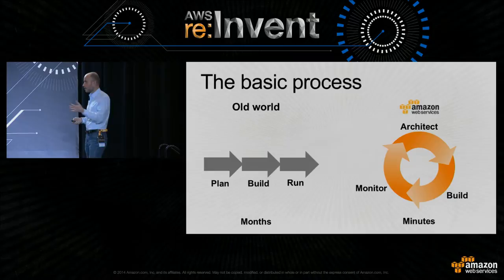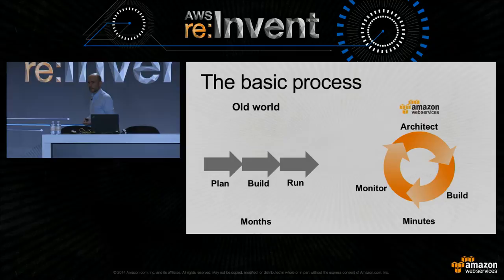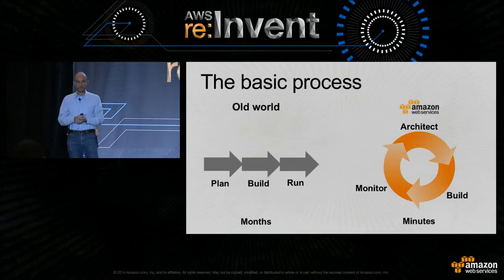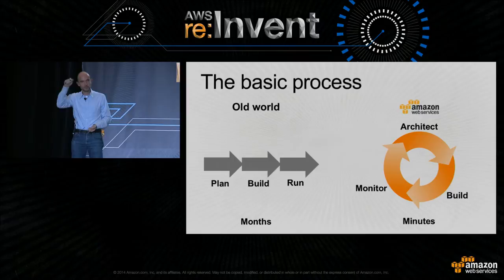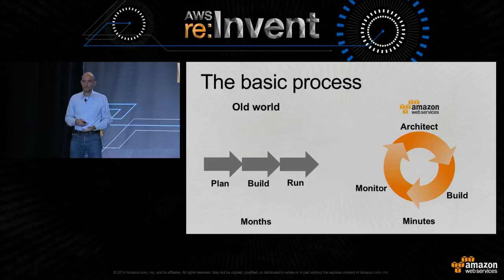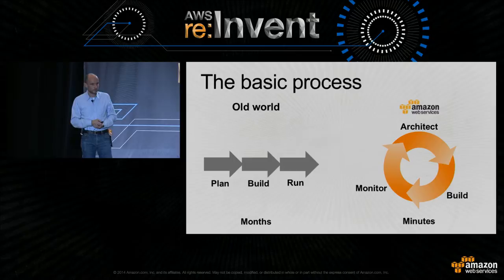In contrast, with AWS, it becomes a continuous cycle: architect, build, and monitor. It doesn't have to be 100% right the first time. You can start with an architecture that works, monitor it, find the biggest cost block, optimize it, and continue iterating — all in a matter of minutes. You're no longer tied to anything you need to write off over three to five years.